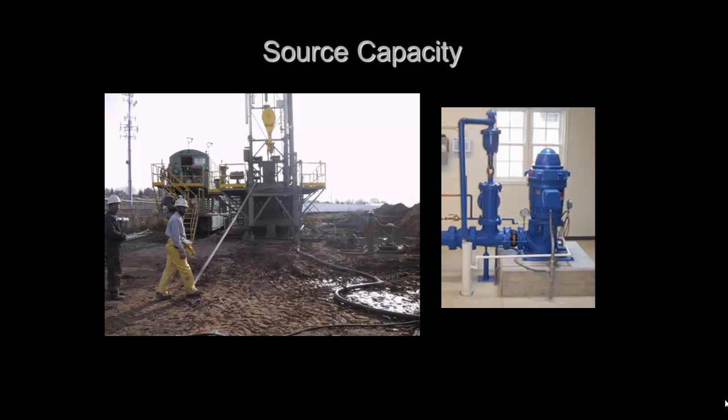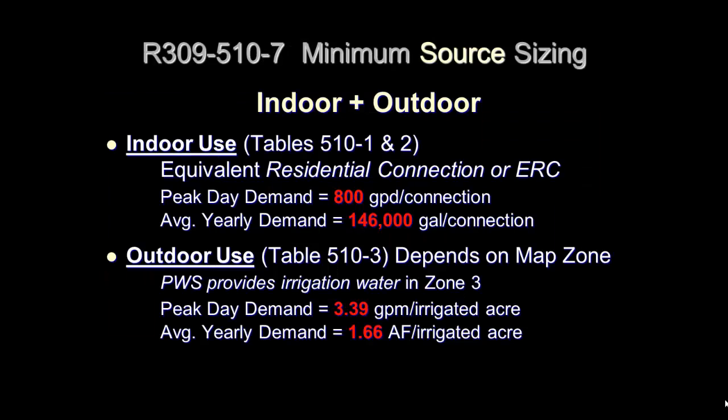We'll now cover the requirements for source capacity. Drinking Water Rule R309-510-7 provides the requirements for minimum source sizing. This includes indoor and outdoor demands. Tables 510-1 and 2 provide the indoor use values for equivalent residential connections or ERCs. The minimum peak demand is 800 gallons per day per connection, or an average yearly demand of 146,000 gallons per connection. The outdoor demands are listed in Table 510-3. The zone is based on the location found on the irrigation zone map. The corresponding zone is now listed on the top header of the public water system report to reduce guesswork.